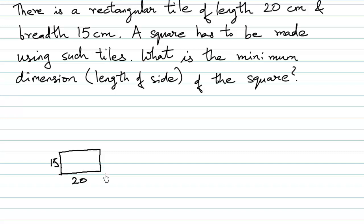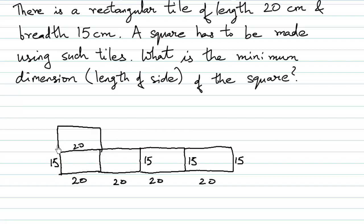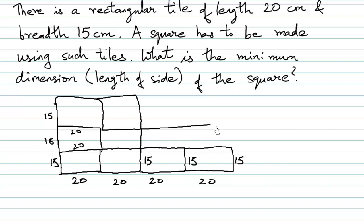There is a tile which is 20 cm long and 15 cm wide — of course this is a rectangle, not a square. You can use many such tiles, but you need to make a square shape. So I can use one more tile here, which is 20 by 15 cm, and one more tile here, and as many tiles as I want. I can also use tiles over here. The question is: what is the minimum length of the side of the square so formed?